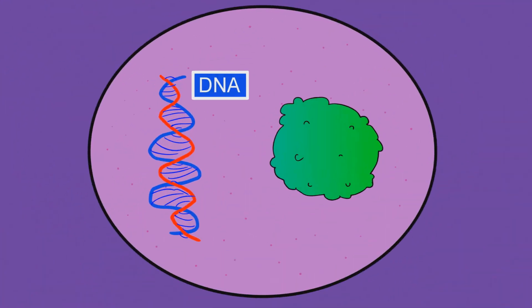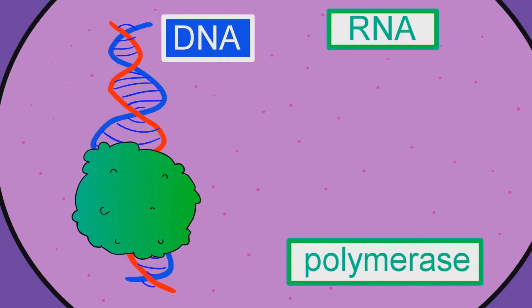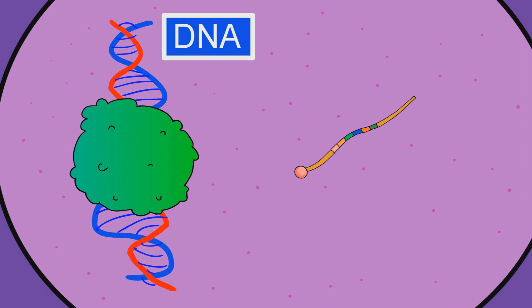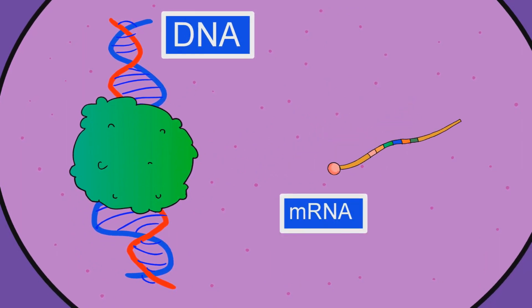The process starts in the nucleus of a cell. RNA polymerase, which basically just copies the DNA, transcribes or copies a section of that DNA that codes for a protein. This copy is called messenger RNA or mRNA.